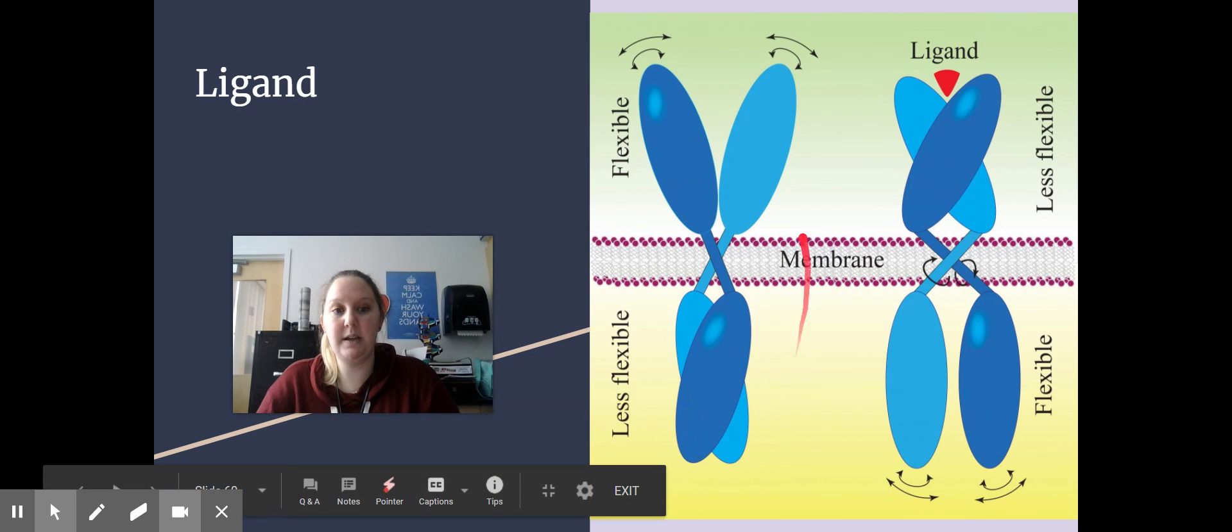So this would be your receptor here. They are flexible on one side and less flexible on the other. When the ligand binds, it changes shape, allowing molecules to pass through into the inside.